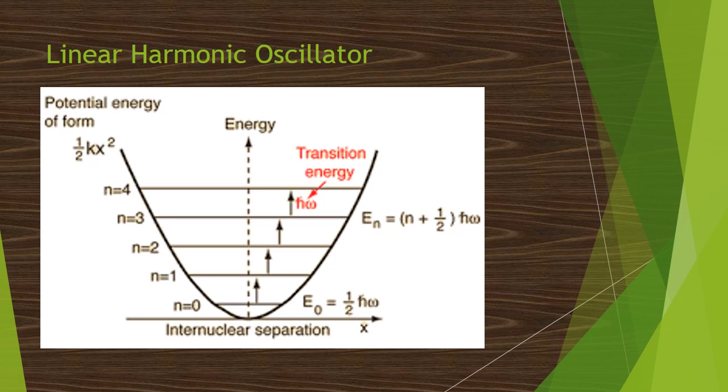And the wave function of the harmonic oscillator will be psi n is equal to 2m nu by h by 2 pi whole power 1 by 4, 2 power n into n factorial whole power minus 1 by 2 into Hn into y, e power y square by 2. Here Hn is a hermit polynomial.